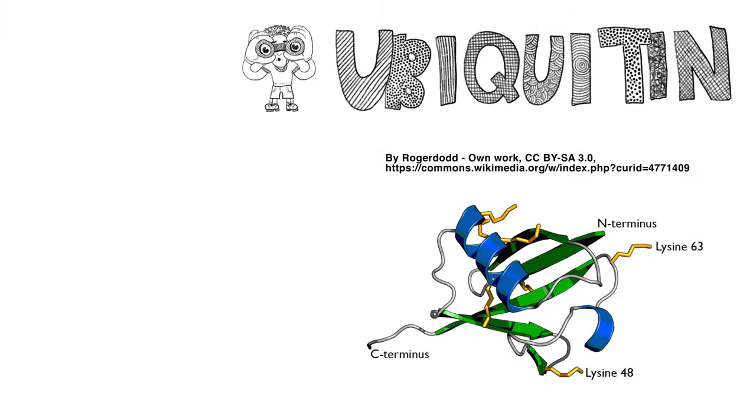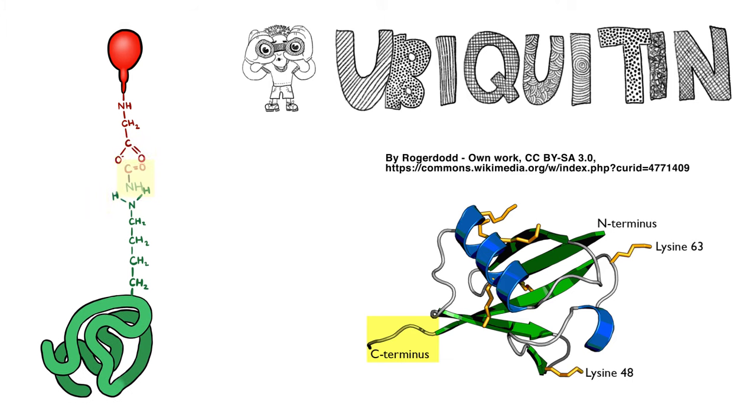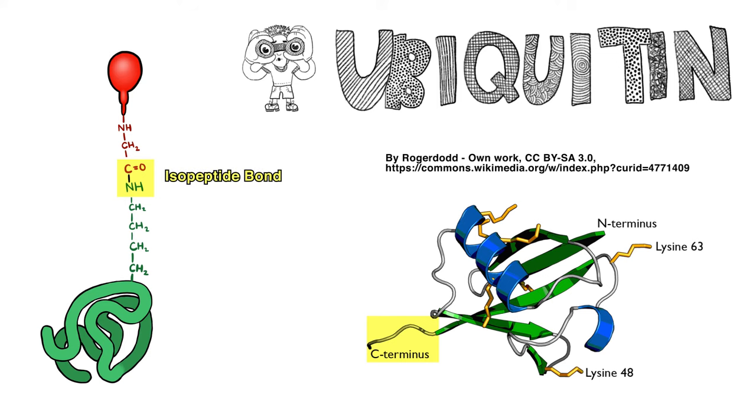Let's take a closer look at ubiquitin. The C-terminus, a glycine tail, is the position at which the ubiquitin gets attached to its target protein. This linkage between the carboxyl group of the glycine residue and the epsilon-amino group of a lysine residue on the substrate is a type of amide bond called an isopeptide bond.